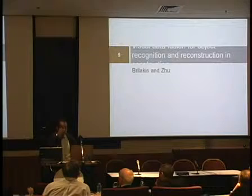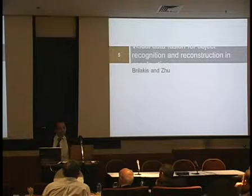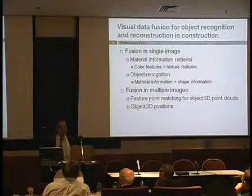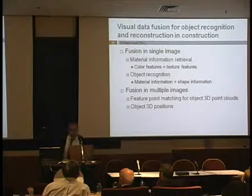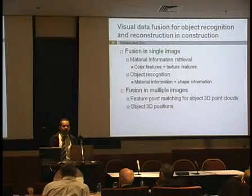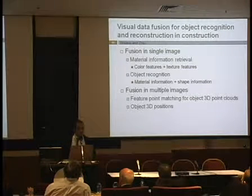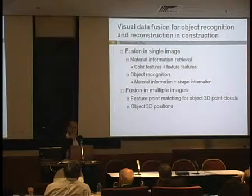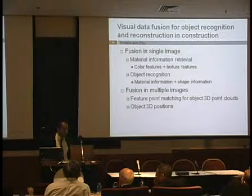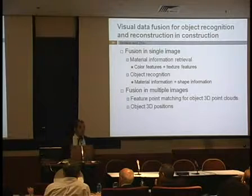In another application, we'll talk about visual data fusion for object recognition and reconstruction in construction by Brilakis and Zhu. They developed a model that has two layers. In the preliminary layer, data fusion is done for a single image — color features, materials information such as color fixtures and texture features are extracted from a single image. In the other level, the data fusion uses multiple images and multiple frames for 3D object recognition.